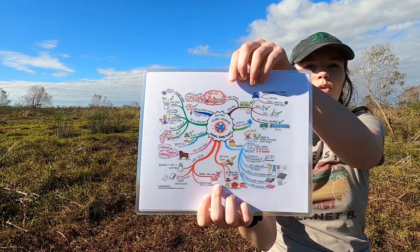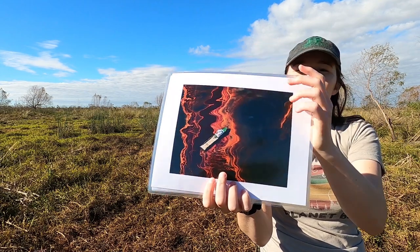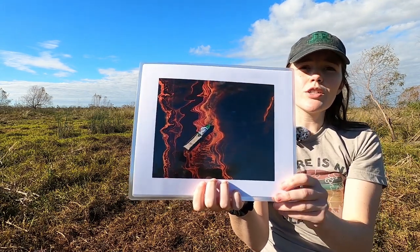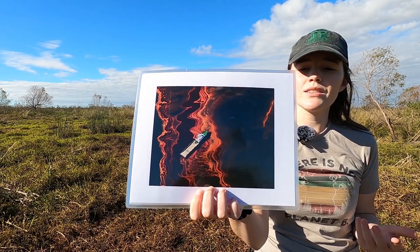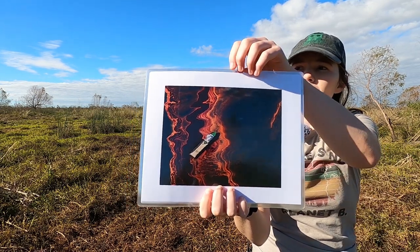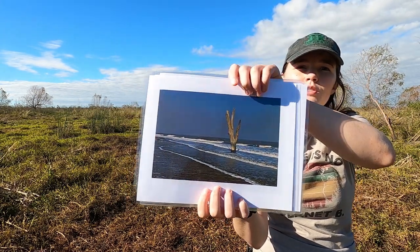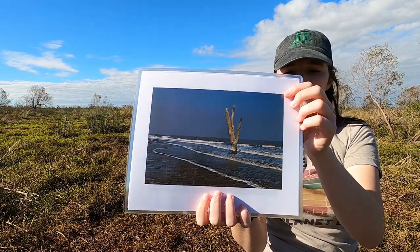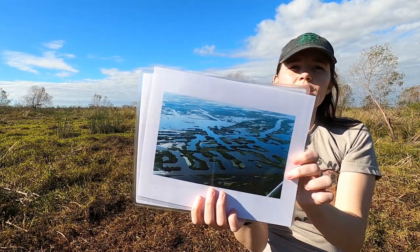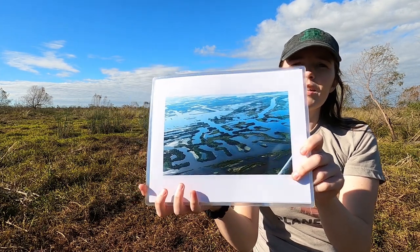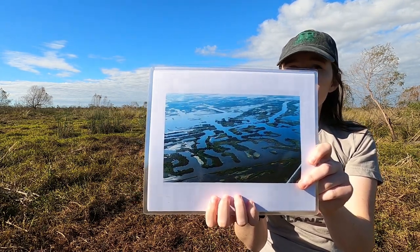First we're going to talk about oil spills. An example of this, especially in the Gulf Coast, is the BP oil spill, which damaged a lot of the plants and animals in the wetlands. Next we have sea level rise, which is a global threat to coastal land all over the world. Oil canals are the canals left by the oil industry that have left wetlands segmented and susceptible to saltwater intrusion.